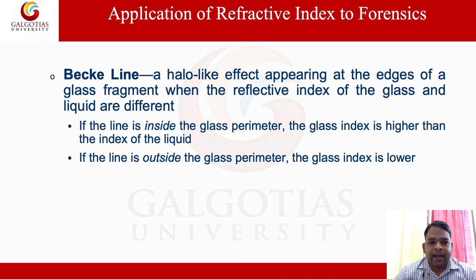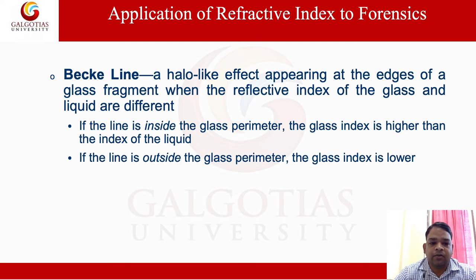Beck line method. In the Beck line method, a halo-like effect appears at the edge of a glass fragment when the refractive index of the glass and liquid are different. If the line is inside the glass, the refractive index of the glass is higher than the index of the liquid. If the line is outside the glass perimeter, the glass index is lower.